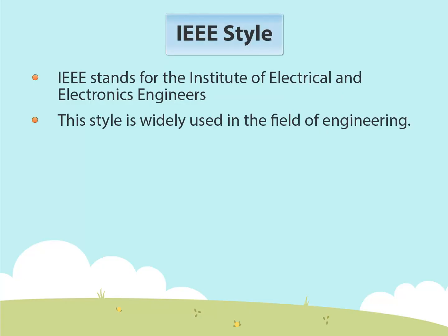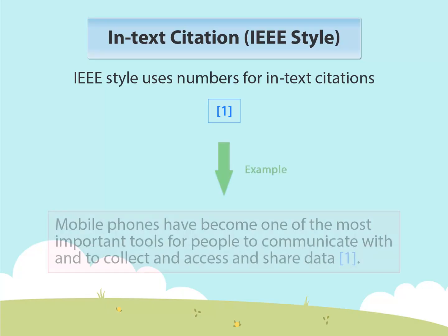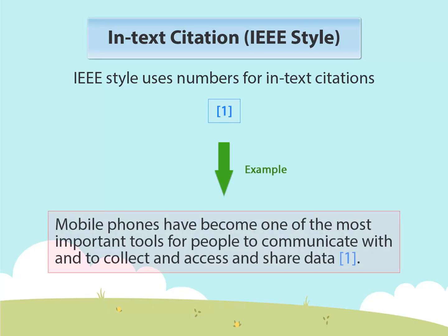IEEE stands for the Institute of Electrical and Electronics Engineers. This style is widely used in the field of engineering. To make an in-text citation, use a number in brackets whenever you refer to someone else's ideas. Here is an example of in-text citation.